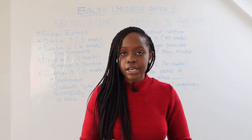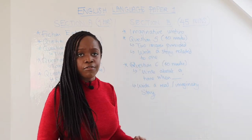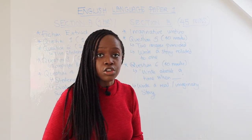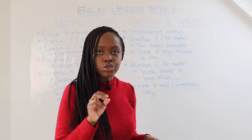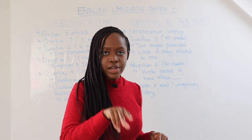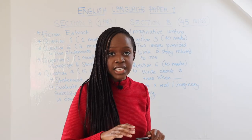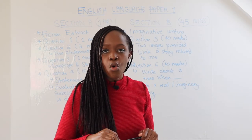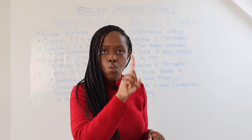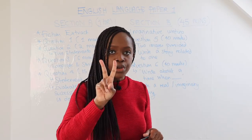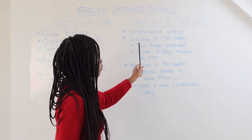Let's now look at section B. You should spend around 45 minutes, and this includes planning. In section B, you have a choice of two questions — question five and question six — and these are worth 40 marks. You choose just one. Do not do both questions.